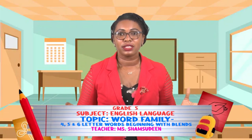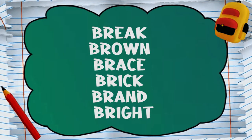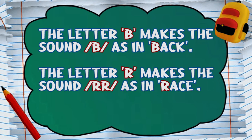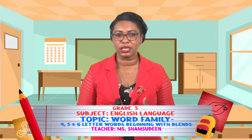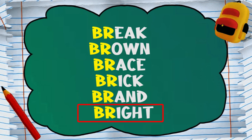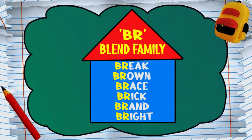We now make another stop on blends family lane. Look at this group of words — do you notice anything they have in common? Yes, the BR beginning. Another blend family is BR. The letter B makes the sound B as in back, and the letter R makes the sound R as in race. So say each word and listen for the sound of B and R. Break, brown, brace, brick, brand, and bright. When we said those words, did you hear both sounds clearly? Yes. So these words do belong to the BR blend family.